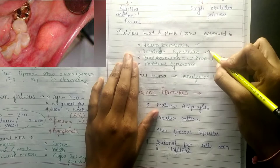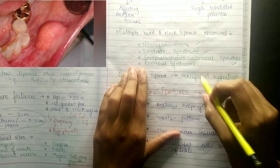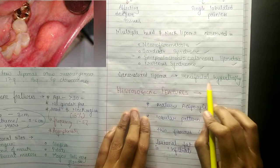Multiple head and neck lipomas are seen in association with syndromes such as neurofibromatosis, Gardner syndrome, encephalocraniocutaneous lipomatosis, and Proteus syndrome. Generalized lipomas are also seen in hemifacial hypertrophy.